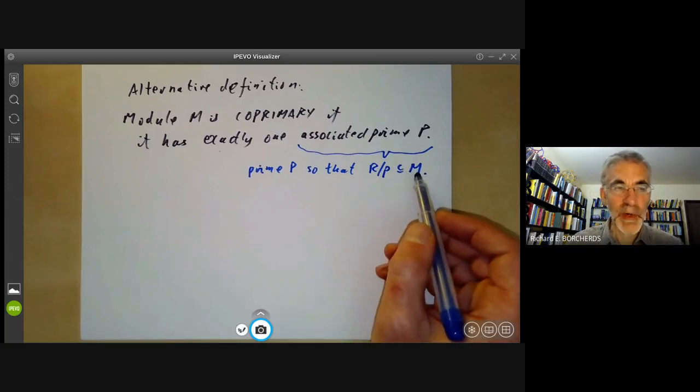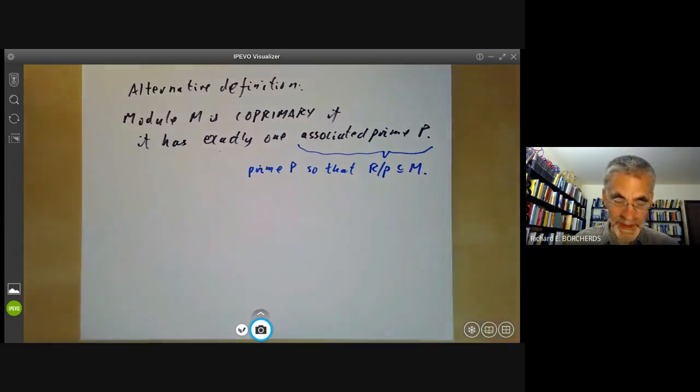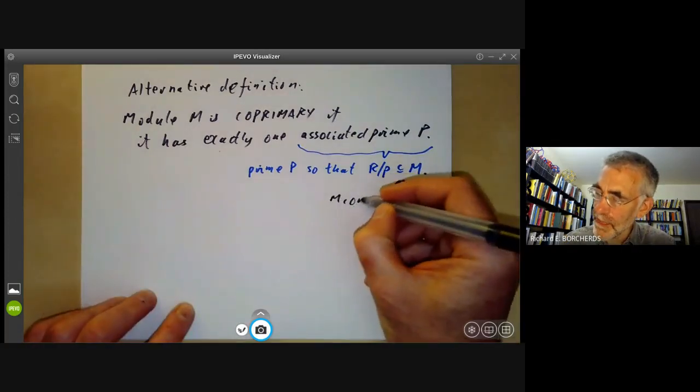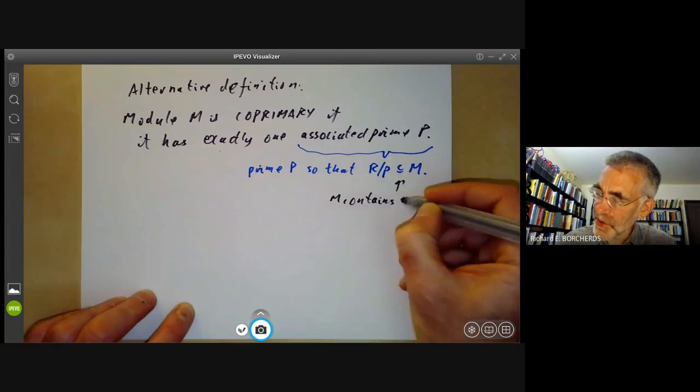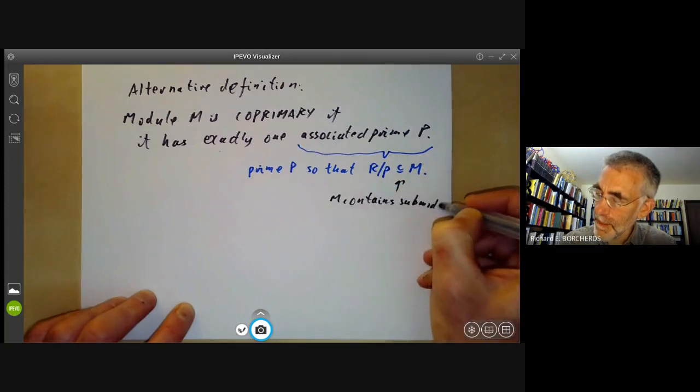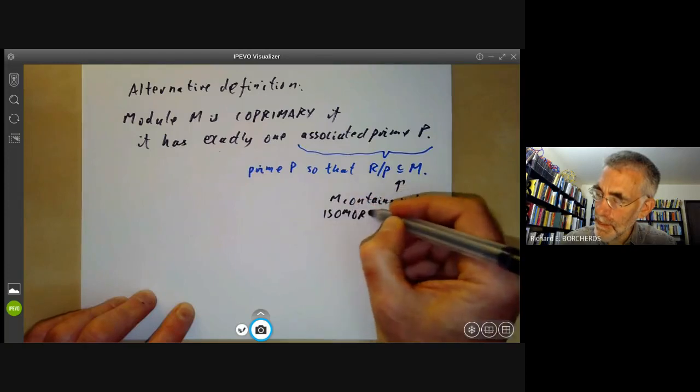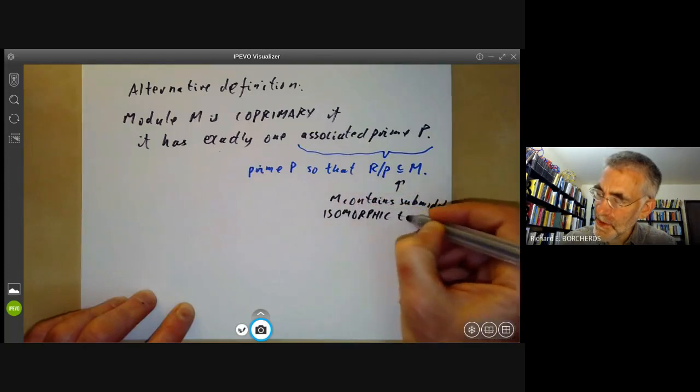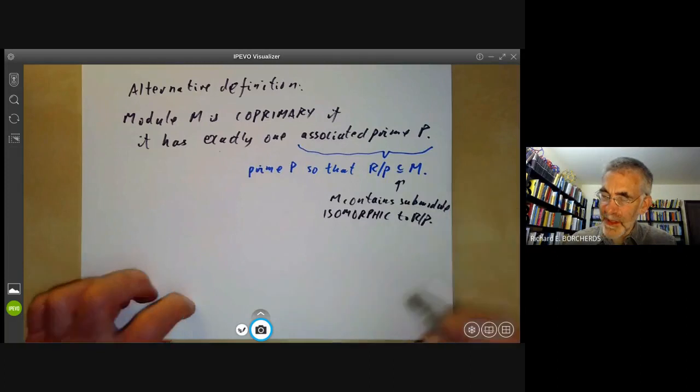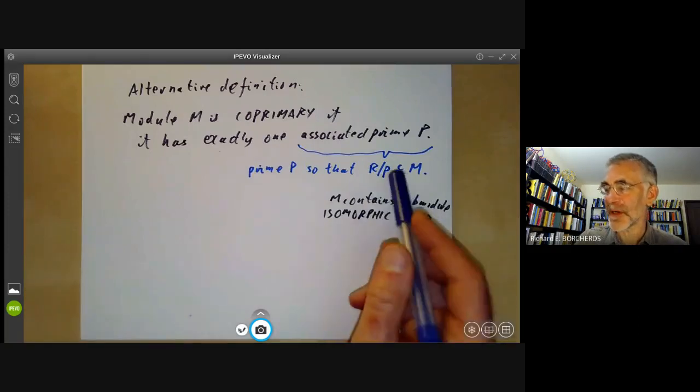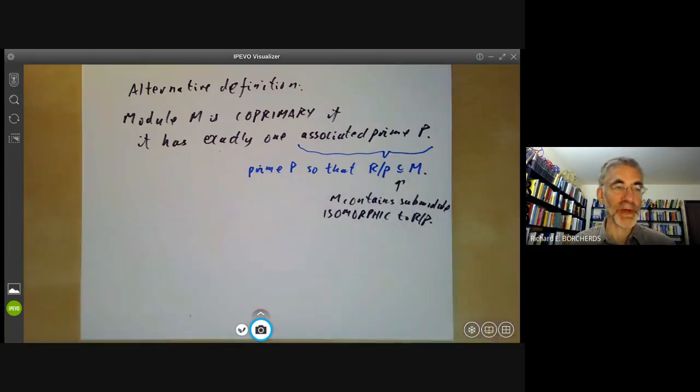Saying that M contains a submodule isomorphic to R/p, but as usual, being precisely correct kind of conflicts with human intuition, and it's more convenient to think of R/p as being a submodule of M and remember that isn't quite correct.